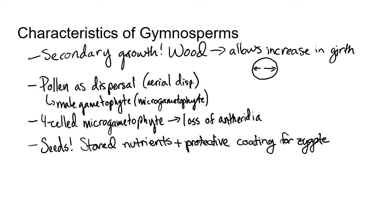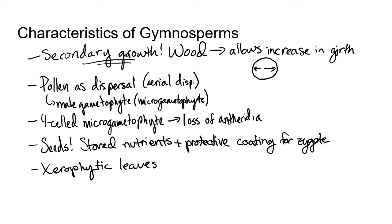So now we have stored nutrients and a protective coating for our zygotes. And then specific to gymnosperms, we're going to see xerophytic leaves. This corresponds to the conditions that they're adapting to — the world is drying out. Water is being increasingly channeled into specific waterways; instead of having these large inland seas, the continents are moving around, mountains are forming, and overall the land masses are drying out. So we have to have adaptations for dealing with that harsh environment, which would be the xerophytic leaves, as well as the bark that we're going to have with our secondary growth.